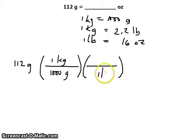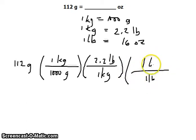1 kilogram is 2.2 pounds, and 1 pound is 16 ounces.